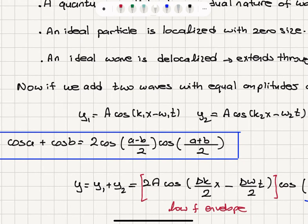The addition of two cosines, cosine a plus cosine b, gives us 2 cosine a minus b over 2, cosine a plus b over 2. We're using this trigonometric identity.